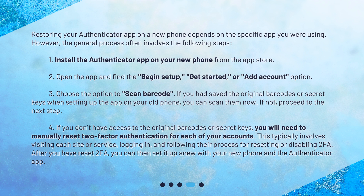Fourth, if you don't have access to the original barcodes or secret keys, you will need to manually reset two-factor authentication for each of your accounts. This typically involves visiting each site or service, logging in, and following their process for resetting or disabling 2FA. After you have reset 2FA, you can then set it up anew with your new phone and the Authenticator app.